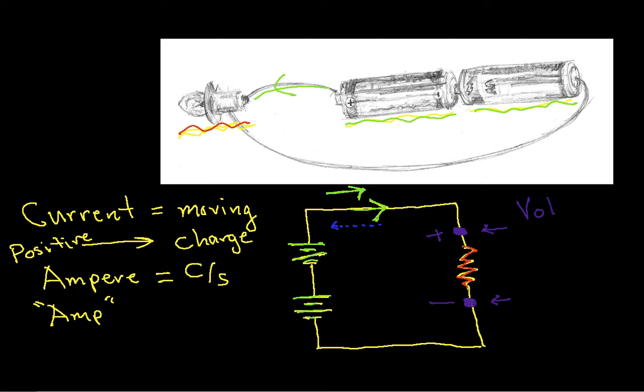So voltage is measured in terms of the volt, named after Mr. Volt, who did a lot of investigation into this sort of stuff. And it's represented or derived as joules per coulomb. It's the amount of energy.